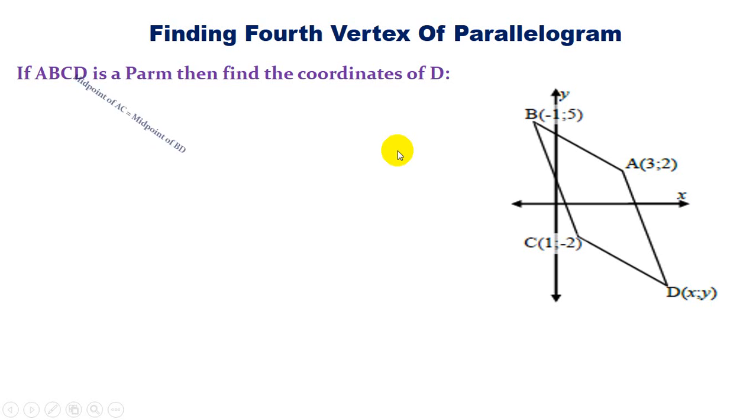If we go back to the properties of a parm we know that the midpoint of AC has to be equal to the midpoint of BD. They have a common midpoint because the diagonals of a parm bisect each other. So first let's find the midpoint of AC.